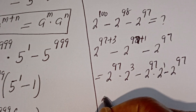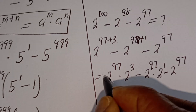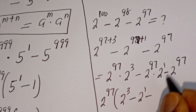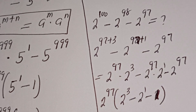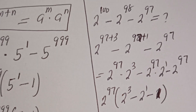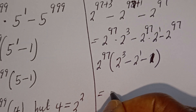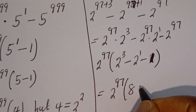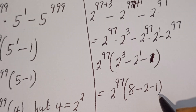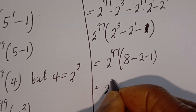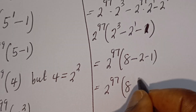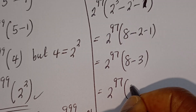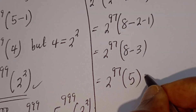And here, 2 to the power of 97 is common. We have 2 to the power of 97, bracket: if you divide this by this we have 2 to the power of 3, minus if you divide this by this we have 2 to the power of 1, minus if you divide this by this we have 1. Then this is equal to 2 to the power of 97, bracket, 2 to the power of 3 is 8, minus 2 to the power of 1 is 2, minus 1. That gives 8 minus 2 minus 1, which is 5. Then this is equal to 2 to the power of 97, bracket, 5. This is the final answer.